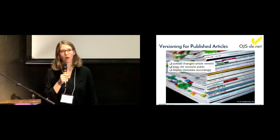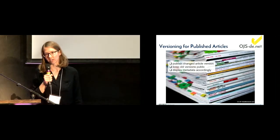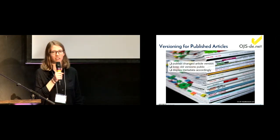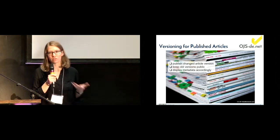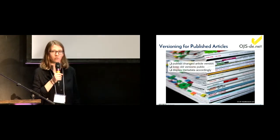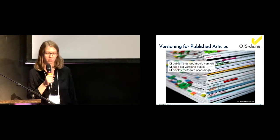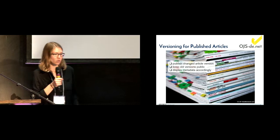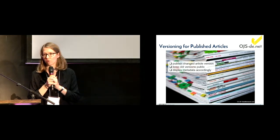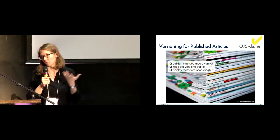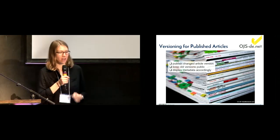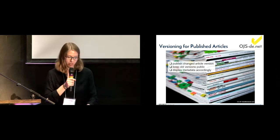So why would we want versioning for published articles? Imagine you have published an article and you want to publish an updated version because something changed or you found new information. You would want to publish this changed article and also keep the old version, and display the metadata accordingly.